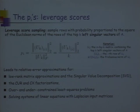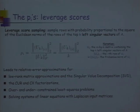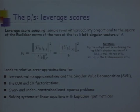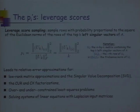If you are willing to sample with respect to those more carefully constructed sampling probabilities, you're going to get relative error approximations for problems where previously you could only get additive error approximations. For example: the top K left and right singular vectors of a matrix (the subspace spanned by those), relative error approximations for CUR/CX, over- and under-constrained least squares problems, and solving systems of linear equations including the special case of Laplacian matrices.